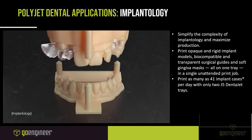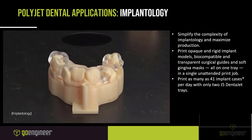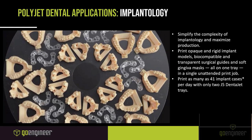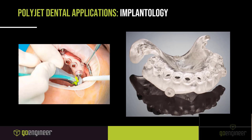In implantology, PolyJet systems allow you to simplify complexity and maximize production. You can print opaque and rigid implant models, biocompatible and transparent surgical guides, and soft gingiva masks — all on one tray in a single unattended print job. You can print as many as 41 implant cases per day with only two J5 DentaJet trays. And according to Brian from Stratasys, a high-speed software update coming in late Q2 will print in half the time with no drop in quality.